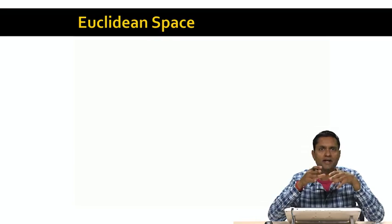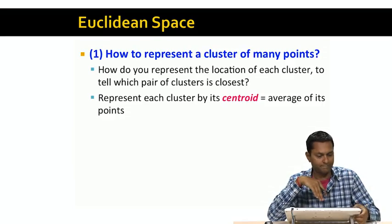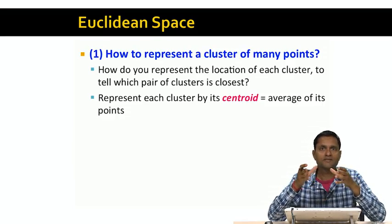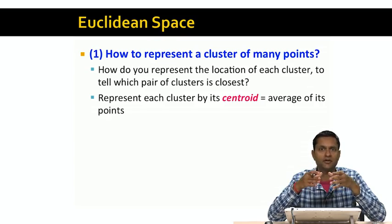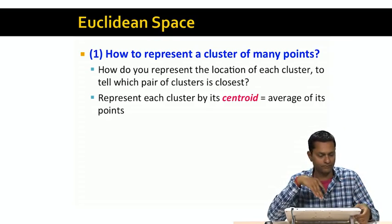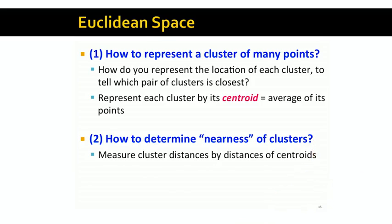Let's start with the simpler case of a Euclidean space. In a Euclidean space, we can always average two points, and the average is also a point in the Euclidean space. This gives us a simple answer to how you represent a cluster of many points: we can represent a cluster by its centroid, which is the average of its points. And to determine the nearness of clusters, we just measure the cluster distances by measuring the distances between the centroids of the clusters.